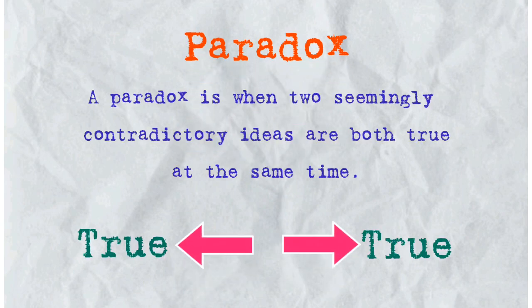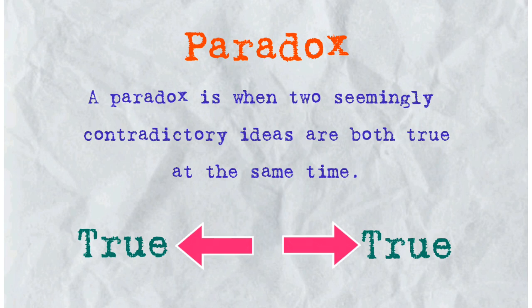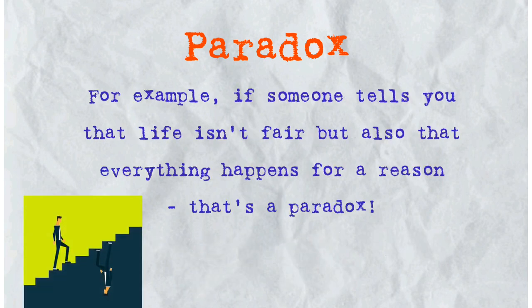And finally, the fifth word is paradox. A paradox is when two seemingly contradictory ideas are both true at the same time. For example, if someone tells you that life isn't fair but also that everything happens for a reason, that's a paradox.